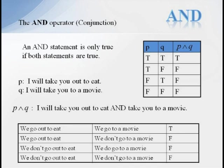Consider the AND operation. A compound statement involving AND is only true if both original statements are true. Recall our first example. If someone says, I will take you out to eat and take you to a movie, what would it take for this statement to be true? The only way this statement could be true is if both parts are true. That is, if it's true you go out to eat and true you go to a movie, then the statement is true.